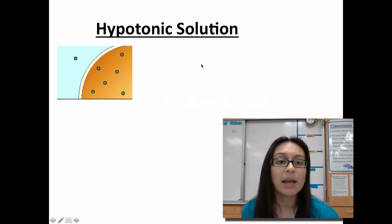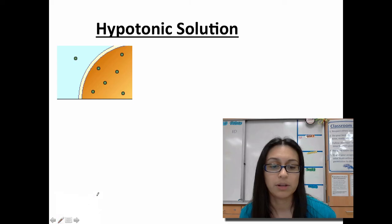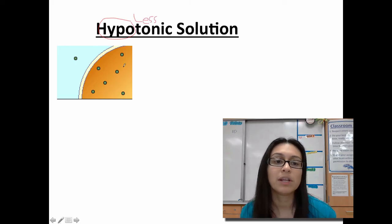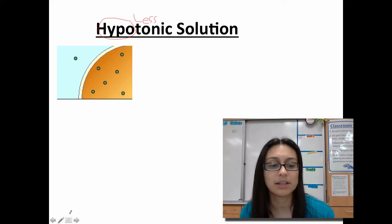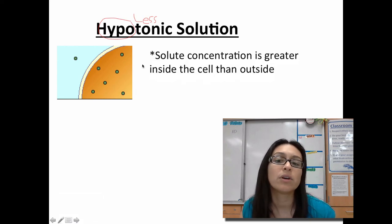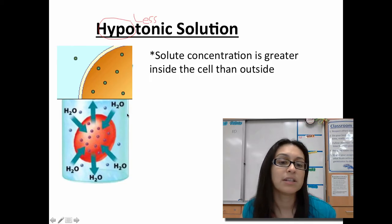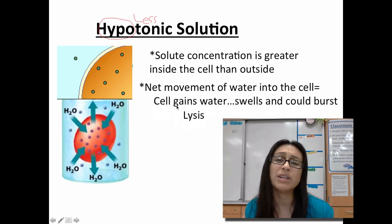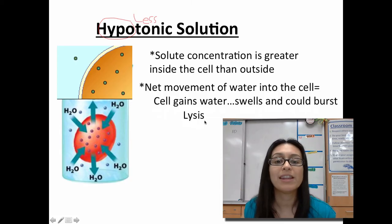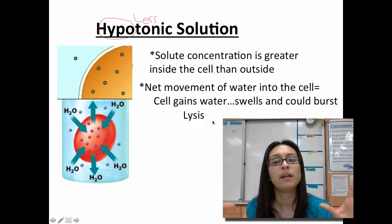Then we have a hypotonic solution. The prefix "hypo" means less. So we're looking at a solution that has less solutes outside than inside the cell. Since there's less solutes outside and more solutes inside, water is going to want to move from outside of the cell to inside. Solute concentration is greater inside than outside, causing more water to move in — a net movement of water into the cell. The cell is gaining water; it can swell until it eventually bursts. We call that lysis — the cell gets to the point where it actually bursts open.